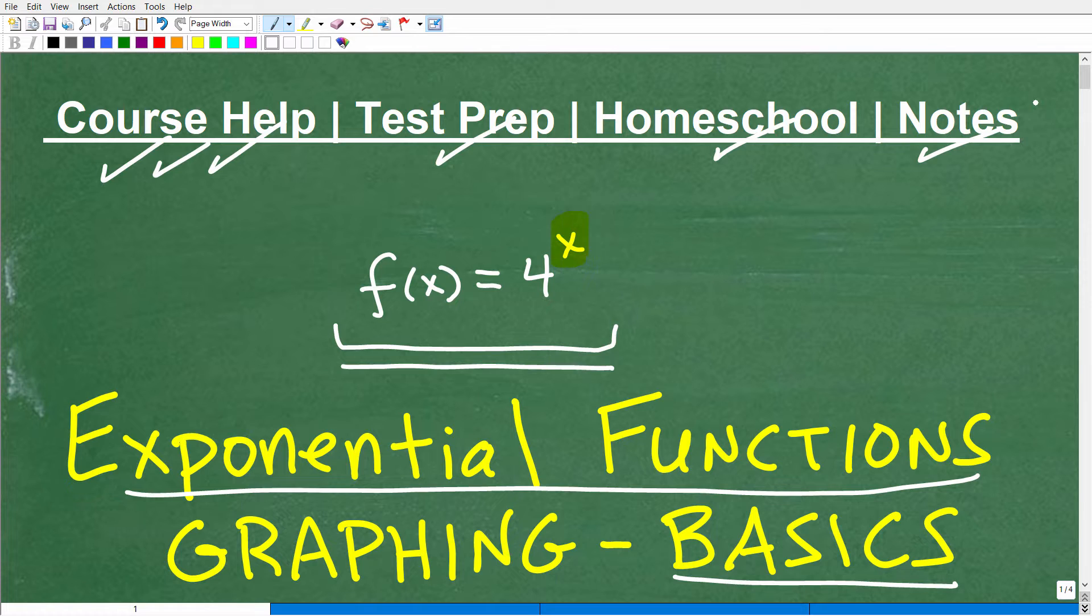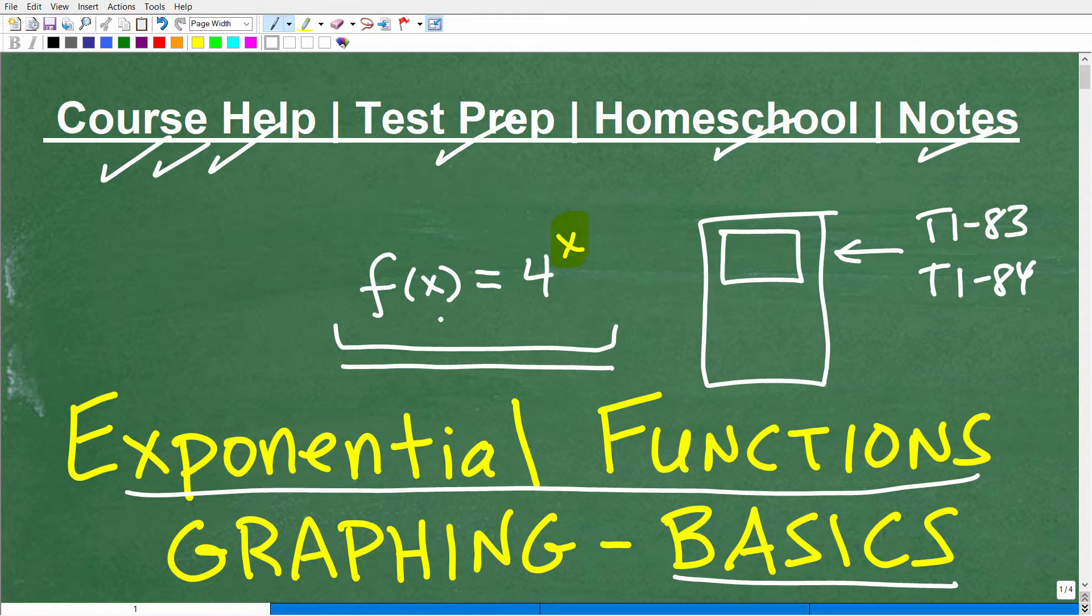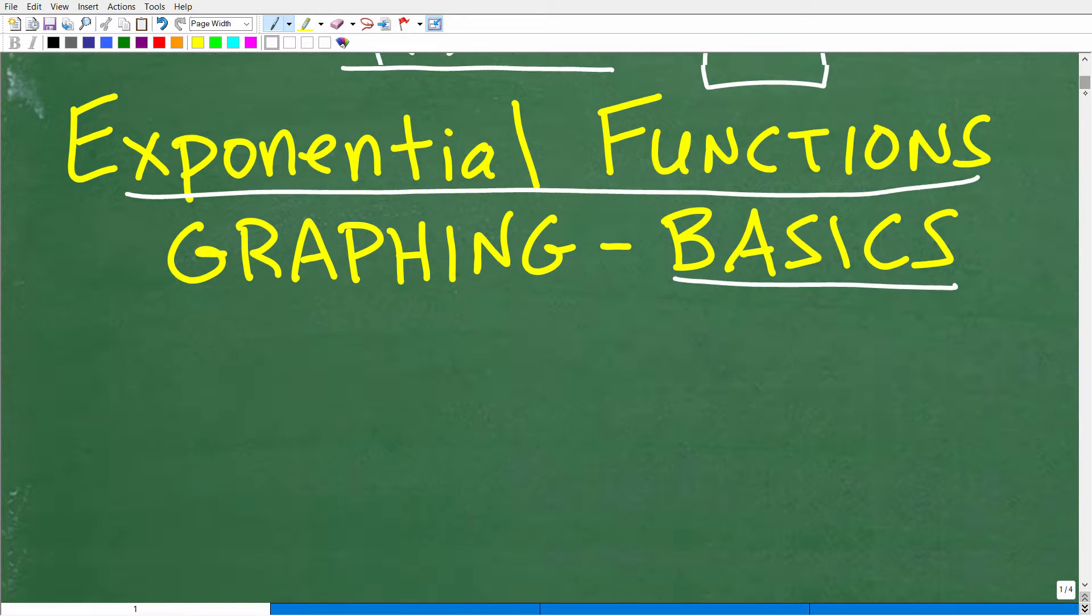So we have f(x) is equal to 4^x. Now, if you have a graphing calculator, that's pretty awesome. And for some of these more advanced courses like Algebra 2 and College Algebra, you're going to almost be required to have a graphing calculator, something like a TI-83 or TI-84, and you can plug this in and you can see the graph, right? So you need to know how to use your graphing calculator, but you're also, more importantly, going to need to know how to graph this by hand. So let's get to it.